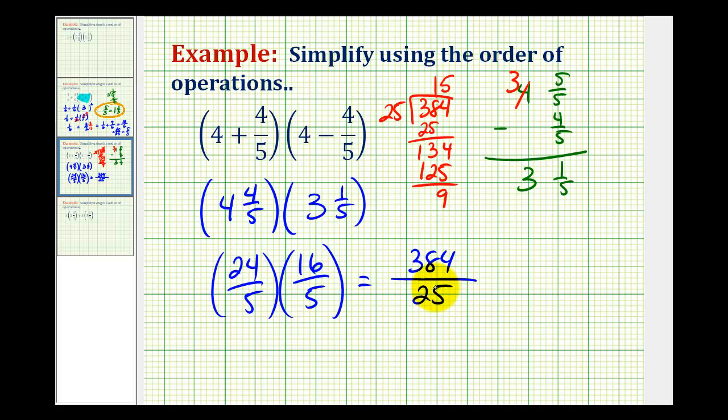So 384 25ths is equal to 15 and 9 25ths. The fraction is formed by the remainder over the divisor. So depending on how you're asked to express your answer, either of these would be correct.